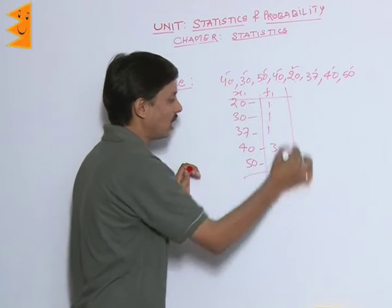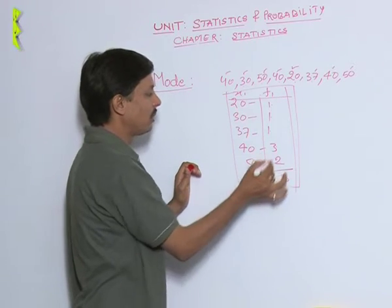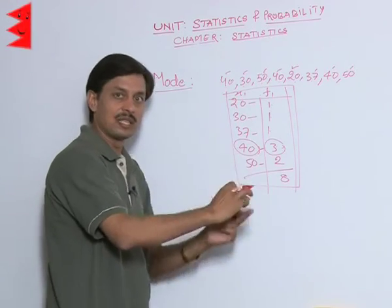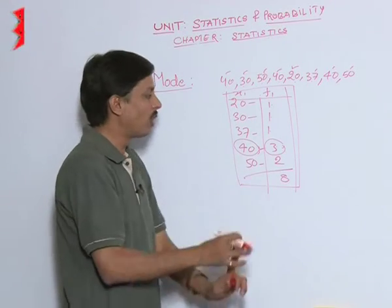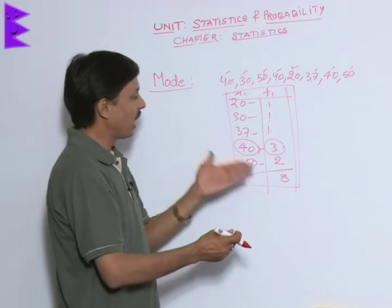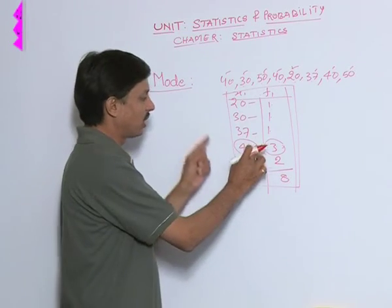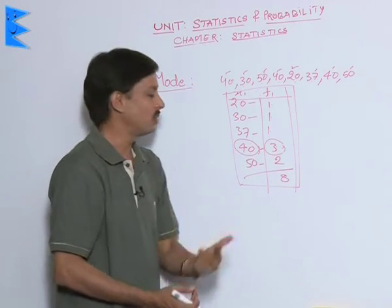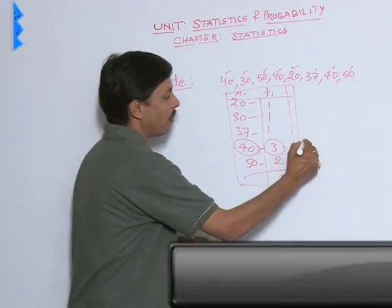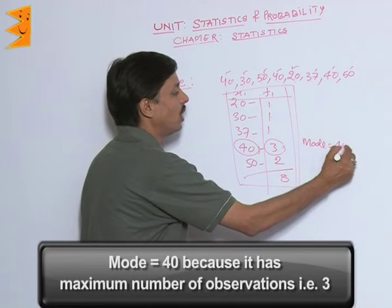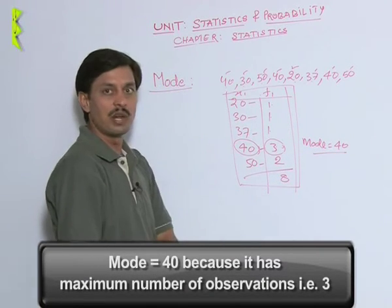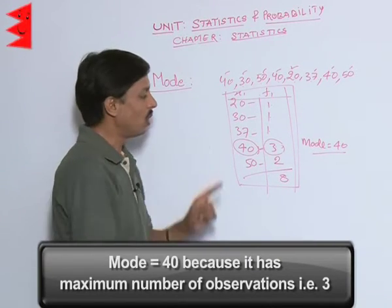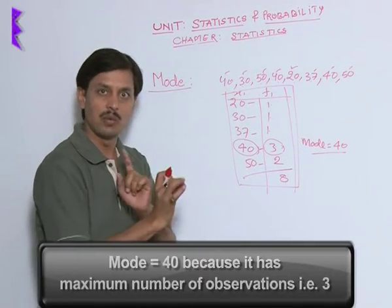We can see here clearly that the maximum frequency is 3 and that is of observation 40. As the definition of mode is that the maximum frequency is of observation 40, so 40 is what? Mode. Mode of this problem is 40 for a very simple reason that the frequency is maximum in this case only. So mode is 40.